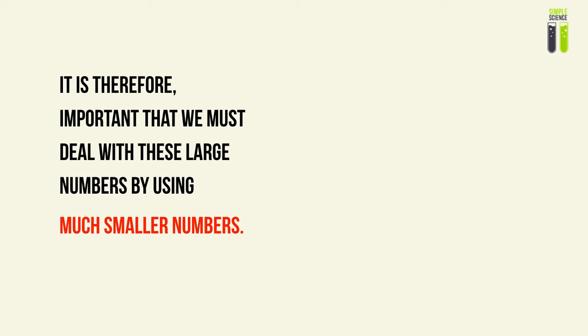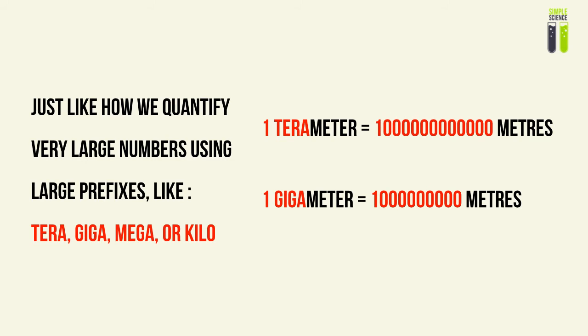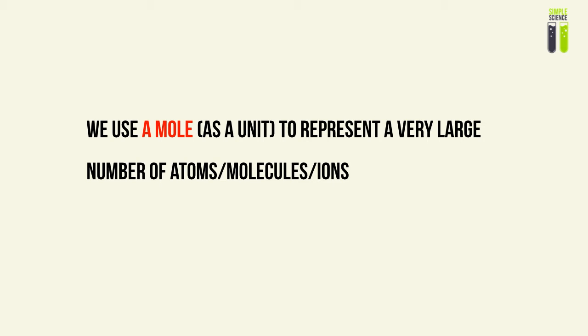Just like in physics, where we quantize charge — we do not commonly express very small charges, such as those of an electron or leptons, in terms of coulombs. Instead, we express them in terms of elementary charge, giving us simpler integer numbers to work with. Similarly, just as we use large prefixes such as tera, giga, mega, or kilo followed by a standard unit — for example, a terameter gives us 10 to the 12 meters, or one gigameter gives us 10 to the 9 meters — we use a mole as a unit to represent a very large number of atoms.